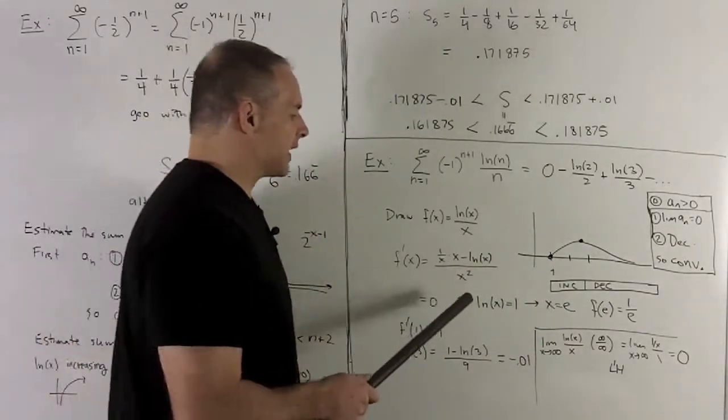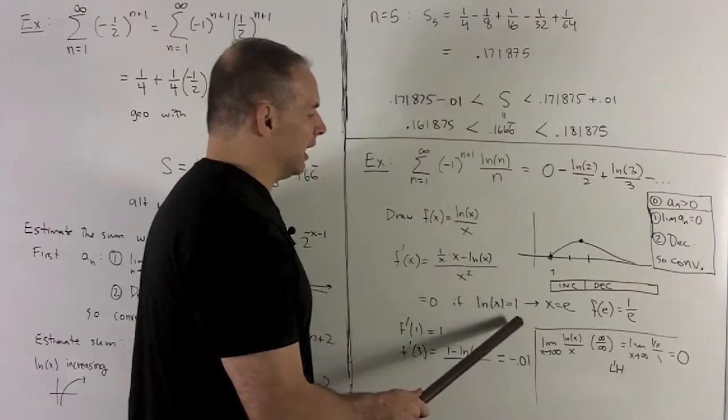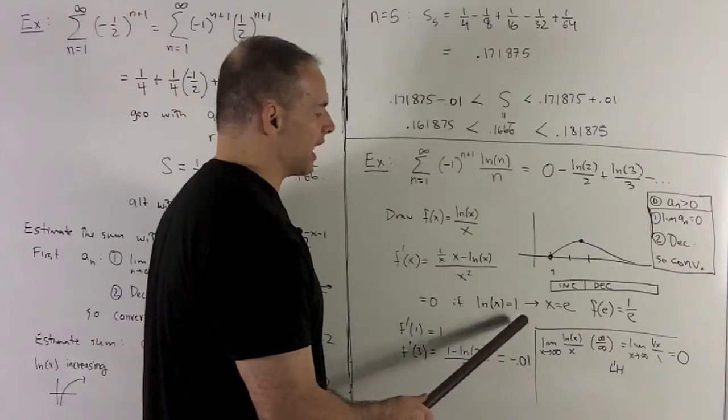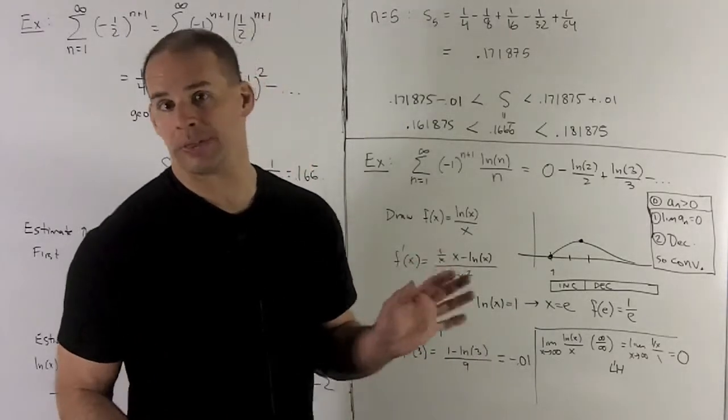One way to think of that is if I take e, raise it to the natural log of x, then that has to be equal to e raised to the first power. E to the natural log of x collapses to x. And then on this side, I have e to the first power, which is just e. That's just another way to think about it.